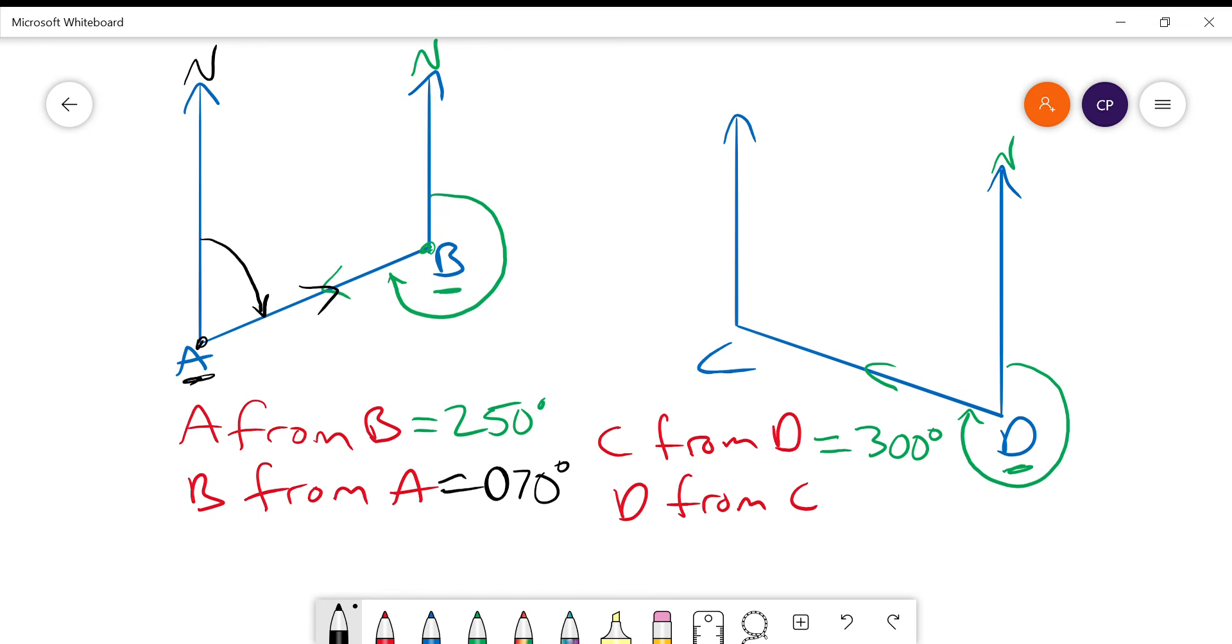And the second part of the question may ask you to get to D from C. So we're measuring from C. So the north line here is important. Sometimes you might actually have to draw the north lines in for yourself if they're not there. And north will always go straight up. And that's really important.